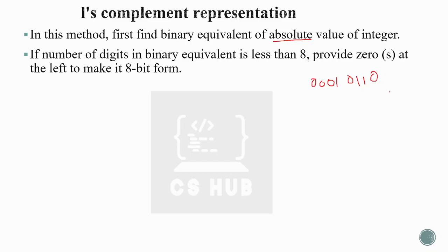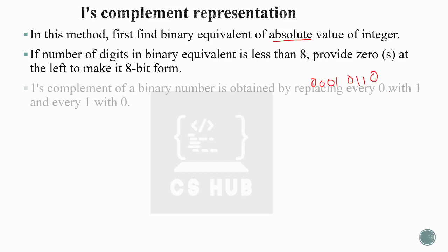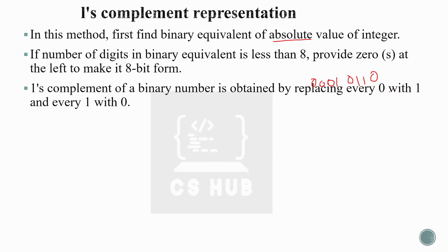We convert the number to binary and then pad it to 8-bit form by adding zeros to the left position. Once the 8-bit binary form is obtained, we apply the one's complement: every 0 is replaced with 1, and every 1 is replaced with 0.